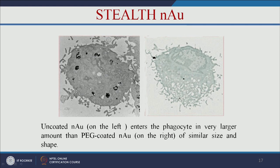Here is an example: an uncoated gold nanoparticle enters the phagocyte — the immune cell. But when you use a polyethylene glycol-coated gold nanoparticle of similar size, it escapes from the immune system — you can see no black dots, meaning no gold nanoparticle was taken up. When you coat the gold nanoparticle with PEG, it escapes the immune system, whereas the uncoated gold nanoparticle is taken up by the phagocyte.